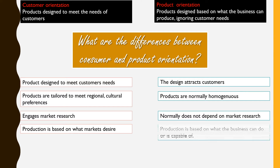Product orientation does not really depend on market research at all, because it's looking at what the business can do. It is dependent on the resources, capabilities, and strengths of the business, and that results in the product they create.